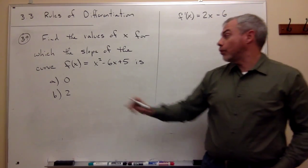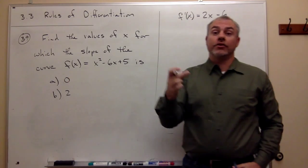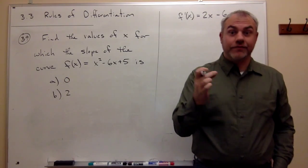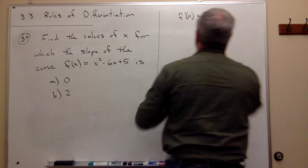Now I'm interested, where is the slope equal to 0? In other words, where is the derivative equal to 0? So I'll take this derivative, 2x - 6, and set it equal to 0.